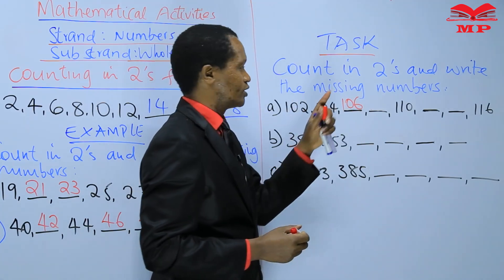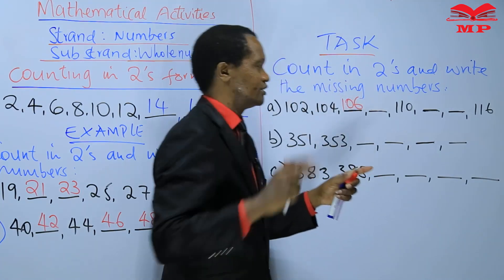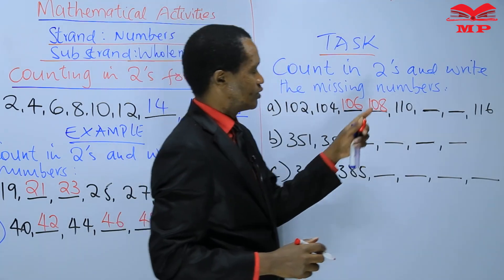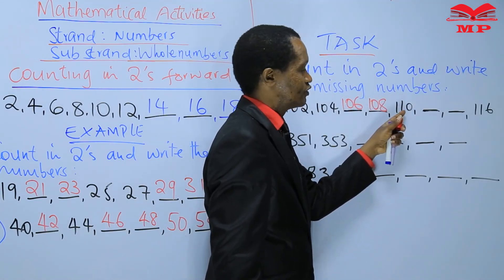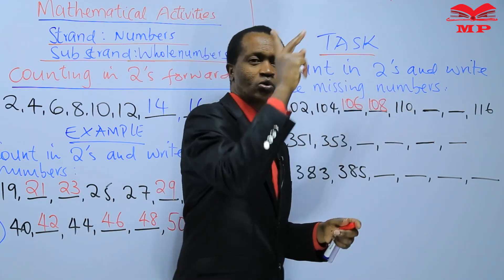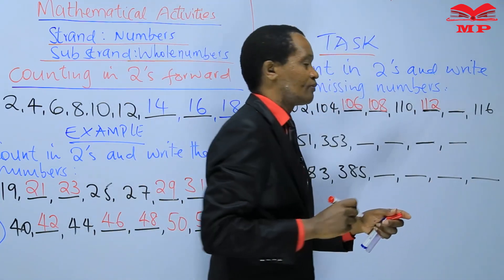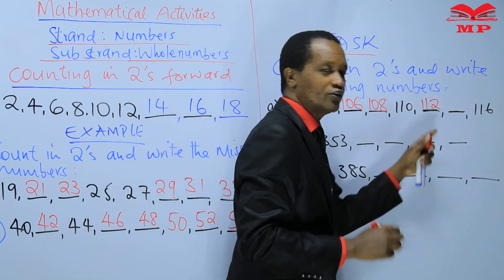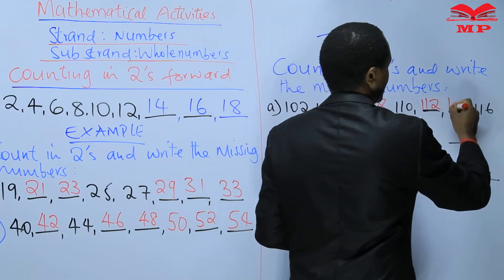After 106 there is another missing number: 106, 107, 108 — so we write 108. After 108 we count: 109, 110 — we have 110 there, it's not missing. But from 110 the next number is missing: 110, 111, 112 — so we write 112.